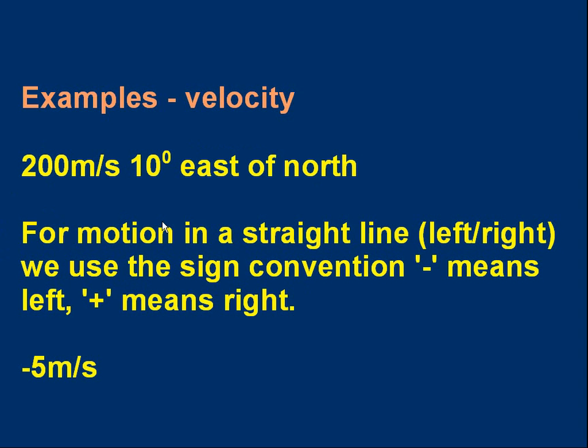Velocity, not to be confused with speed which is a scalar. Velocity could be 200 meters per second and the direction 10 degrees east of north. That's a compass bearing. So that whole set of information, the magnitude which is the speed and the direction, that whole set of information is a vector. It's the velocity vector.